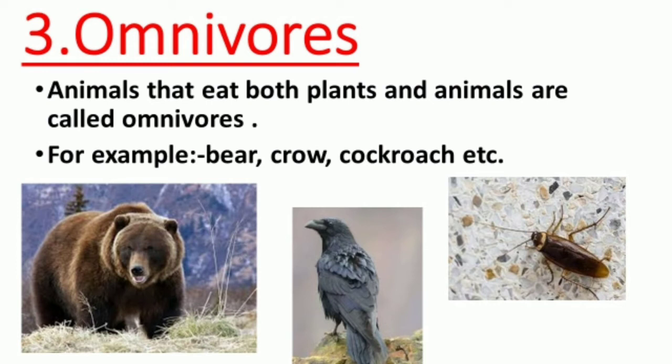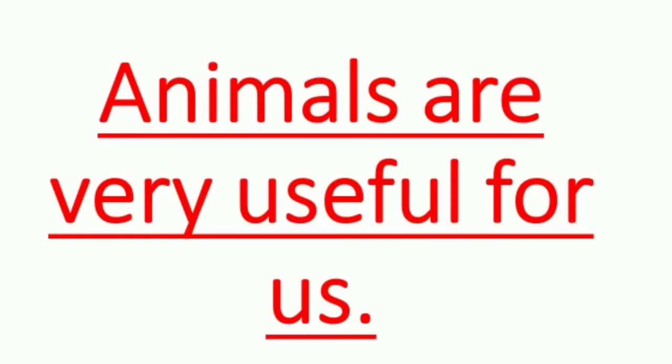Number three: Omnivores. Animals that eat both plants and animals are called omnivores. Yaani, jo animals plants aur animals dono ko hi khaa sakte hain aur zinda rehte hain, unko bolte hain hum omnivores. Example ke liye, bear, crow, cockroach — yeh sab animals plants bhi khaate hain aur animals products ko bhi. So, these are called omnivores.